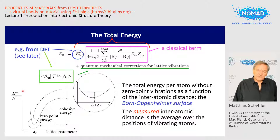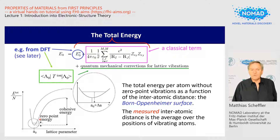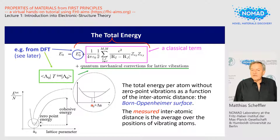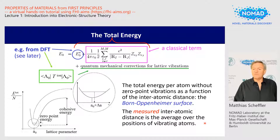Here you see the total energy as a function of the lattice parameter. This has a minimum, and typically you would say the minimum is where the lattice constant is. However, the curve is not symmetric — it is steep on the left side because of Pauli repulsion, and somewhat more weakly changing on the right side. The position of the energy minimum is at one point, but as atoms are not really static but vibrate with a zero-point vibration, their average position is slightly shifted. So the total energy per atom without zero-point vibration as a function of the interatomic distance is called the Born-Oppenheimer surface, but the measured interatomic distance is the average of the vibrating atoms, typically slightly bigger than the Born-Oppenheimer minimum.